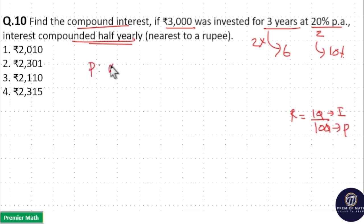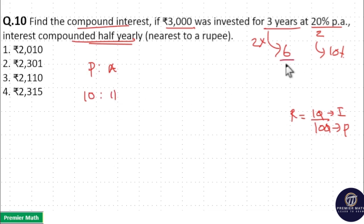Now take the principal and amount ratio. Principal is 10 parts and amount is 10 plus 1 = 11 parts. The total number of terms is 6, so take the ratio of 10 raised to 6 and 11 raised to 6.